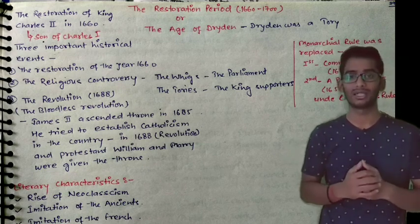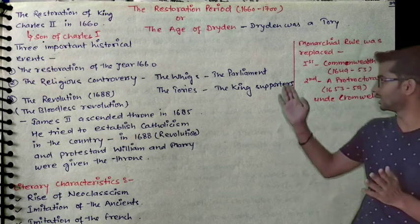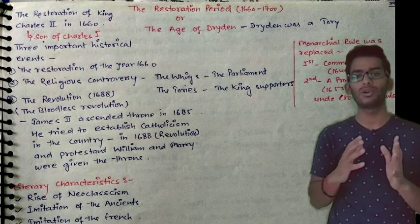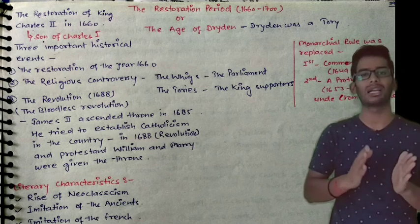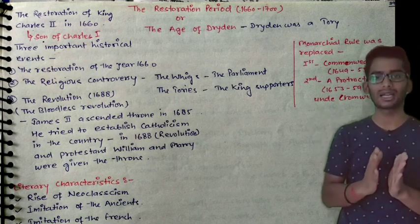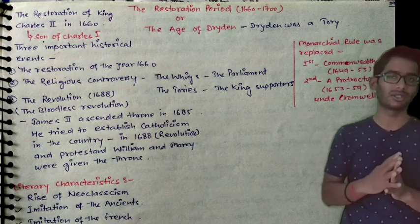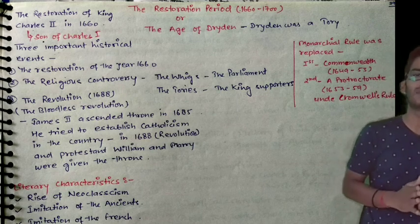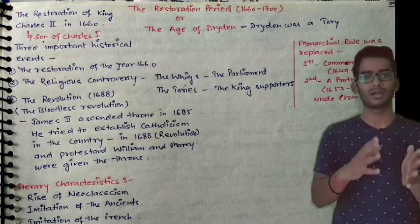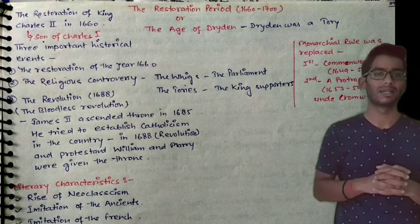Before that, the monarchial rule was replaced twice. First was by the Commonwealth, between 1649 and 1653. Second was under the Protectorate, under Cromwell's rule, between 1653 and 1657. After that, in 1660, Charles II was brought back to England — that's why it is called the Restoration period.